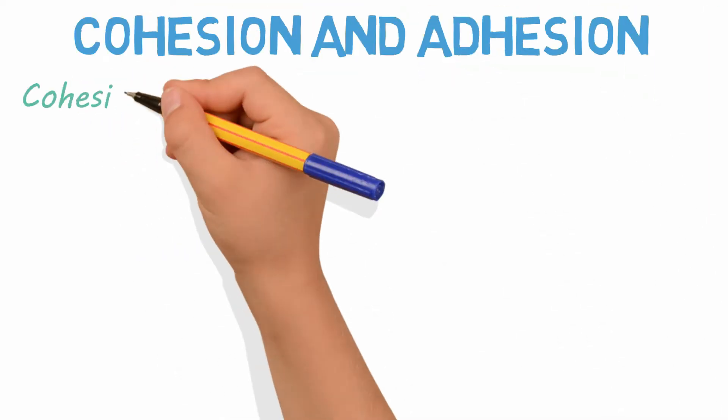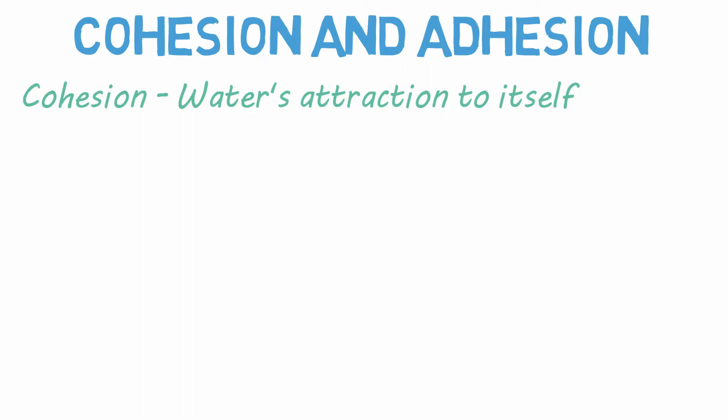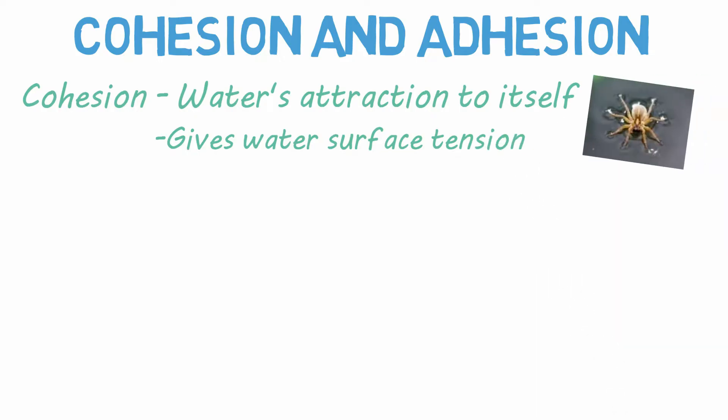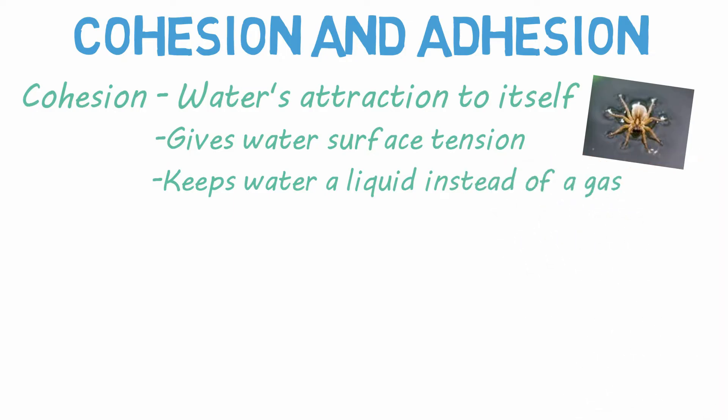Cohesion and adhesion are two such properties. Cohesion is water's attraction to itself. The hydrogen bonds that I mentioned facilitate this. This is also why water has surface tension, allowing bugs to walk on it. Additionally, cohesion keeps water a liquid at moderate temperatures instead of a gas.